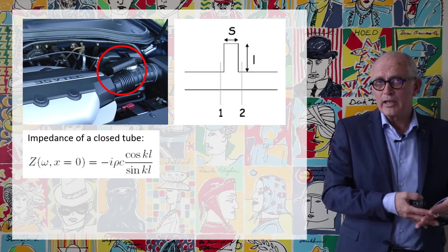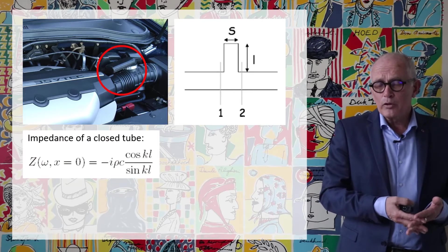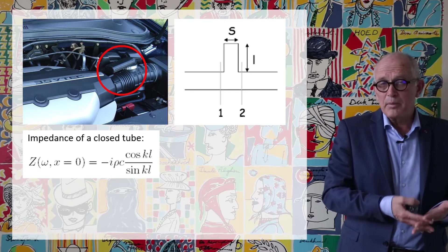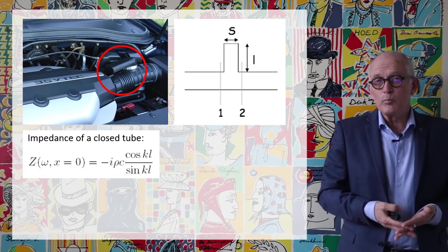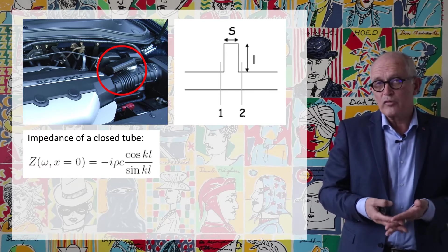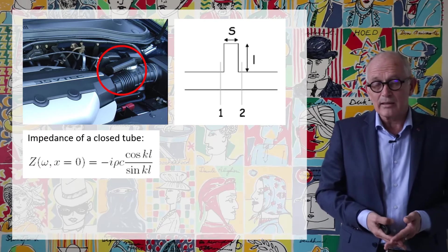Well we know the impedance of a simple duct. We have calculated that when we looked at resonances and we know that the impedance of a simple duct of length L is equal to minus i rho c cosine kL over sine kL.